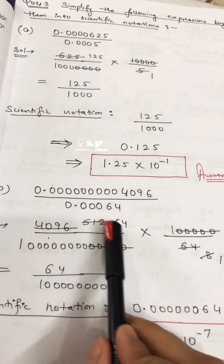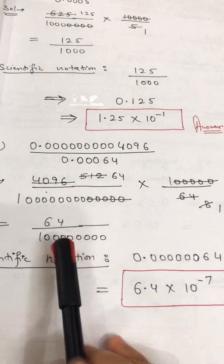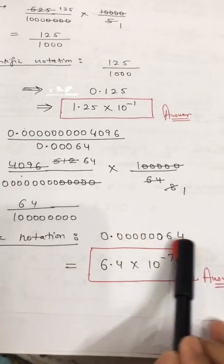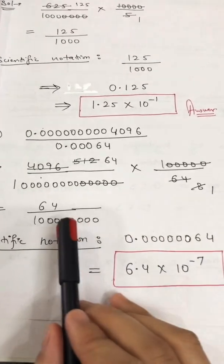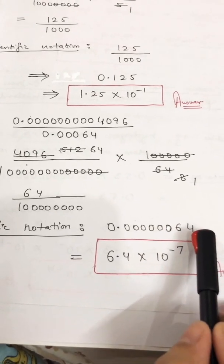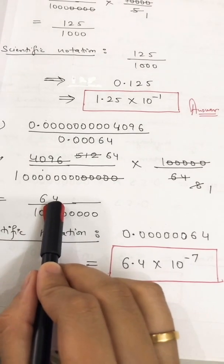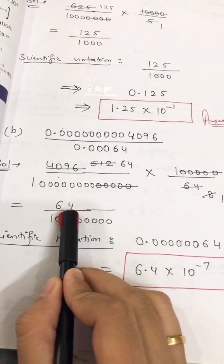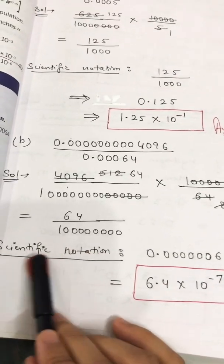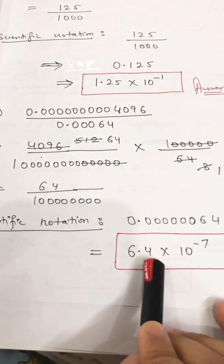After canceling, 64 is left in the numerator and in the denominator these many zeros are left — one, two, three, four, five, six, seven, eight zeros. Now to write this fraction in decimal form: count the number of zeros — eight — so place a decimal before eight digits. If digits are only two, place zeros to make it eight digits total.